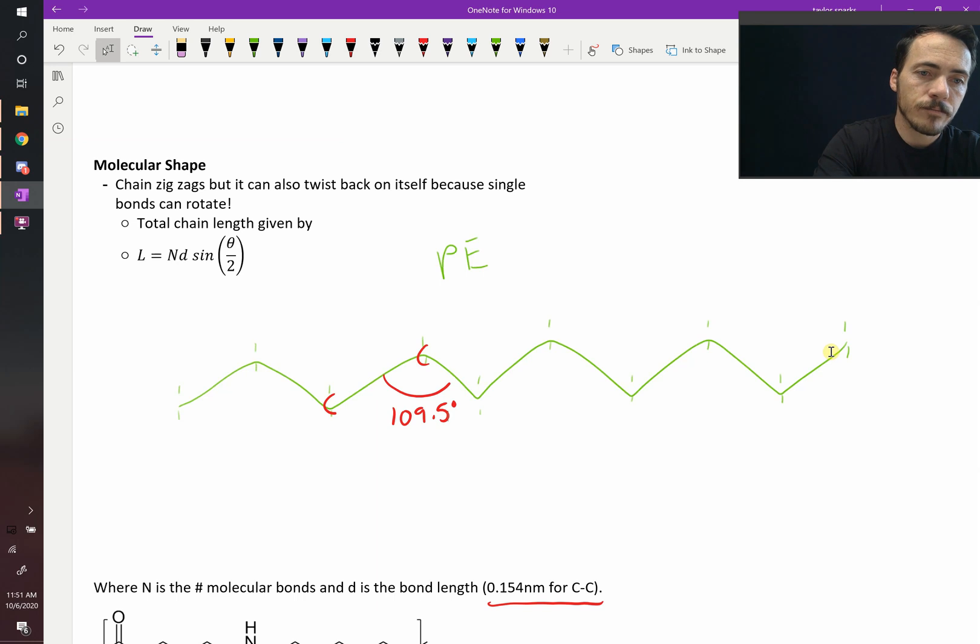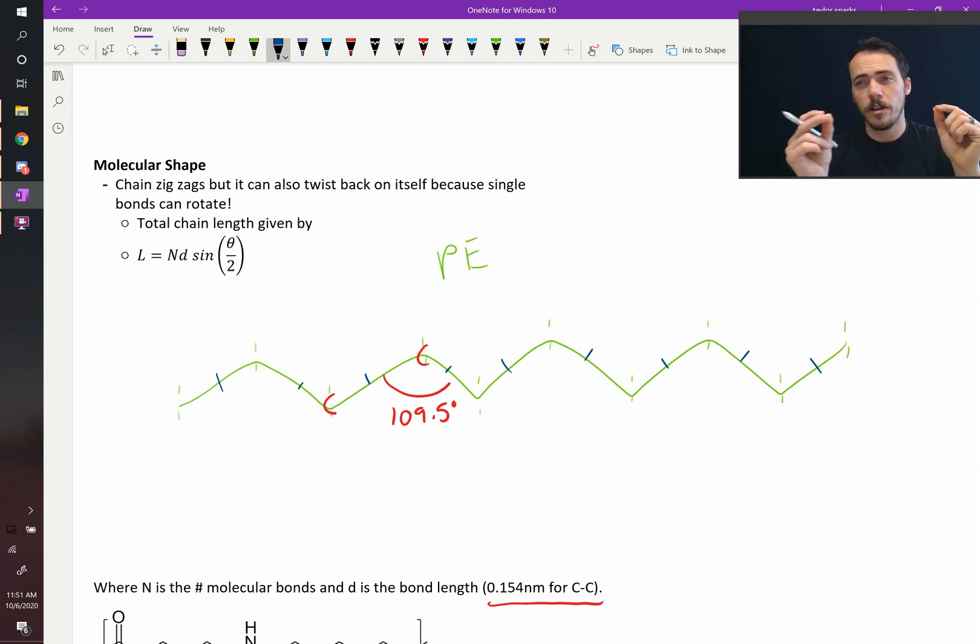We'd say great, we can count the bonds along here. It's got 1, 2, 3, 4, 5, 6, 7, 8, 9 bonds, because it's 10 carbons, so there's 9 bonds between those 10.